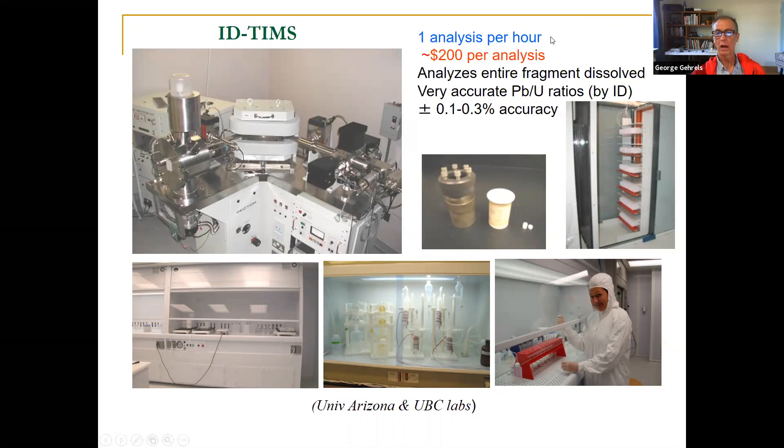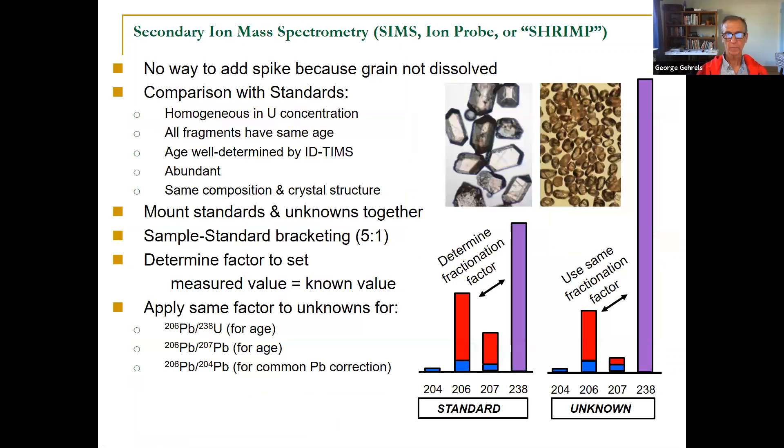It takes about an hour to do each analysis. That's pretty expensive to do it at that rate. So you might pay $100 or $200 for an analysis. But the good news is you get amazing accuracy, a tenth of a percent accuracy now from ID TIMS. So if you're doing high precision geochronology, this is what you want to do.